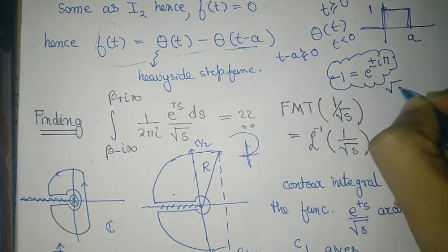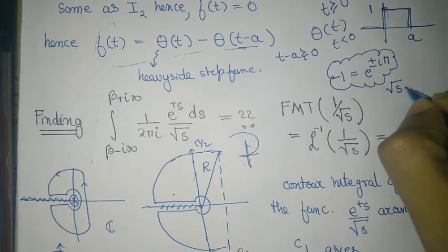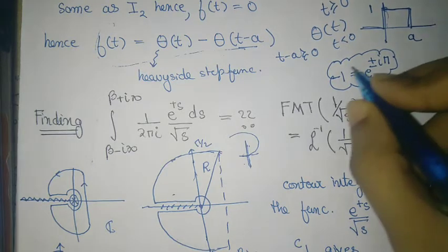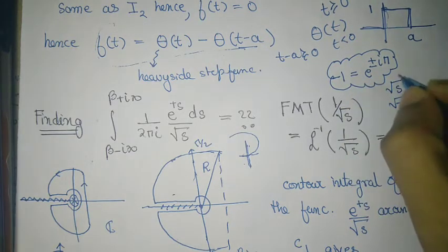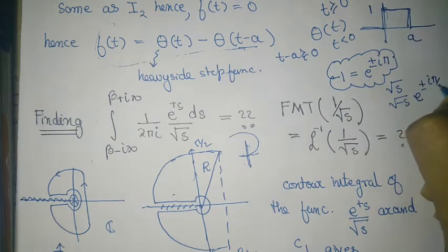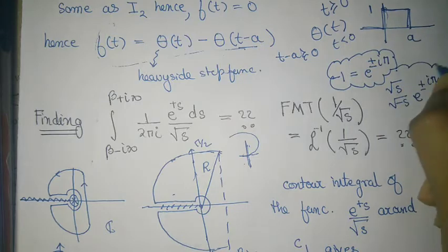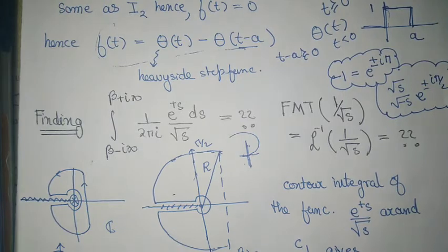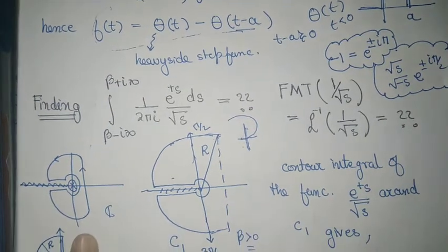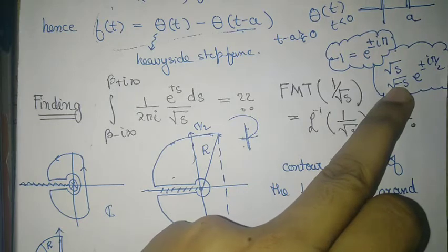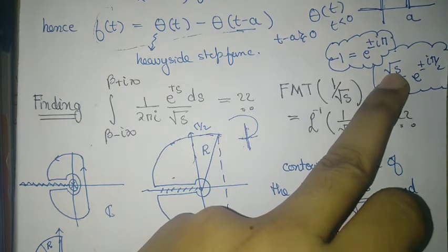And hence root s can be written as root of minus s times minus 1, where minus 1 can be written as minus i pi by 2. So this is not the exact, but it is the related argument which will be important in evaluating these integrals. Now, if s is negative, then minus s is positive. So for s less than 0,